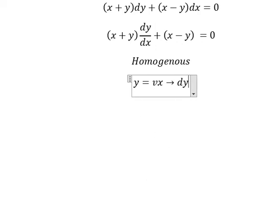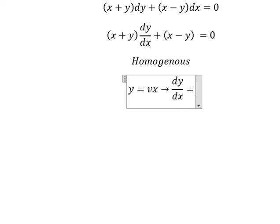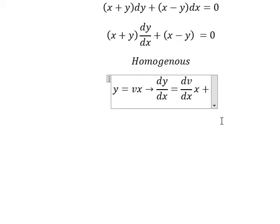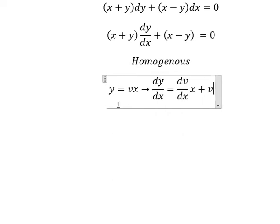We have dy/dx equals to first derivative of v, we have dv/dx multiplied by x. Next we do first derivative of x, you got v because first derivative of x you got number one.